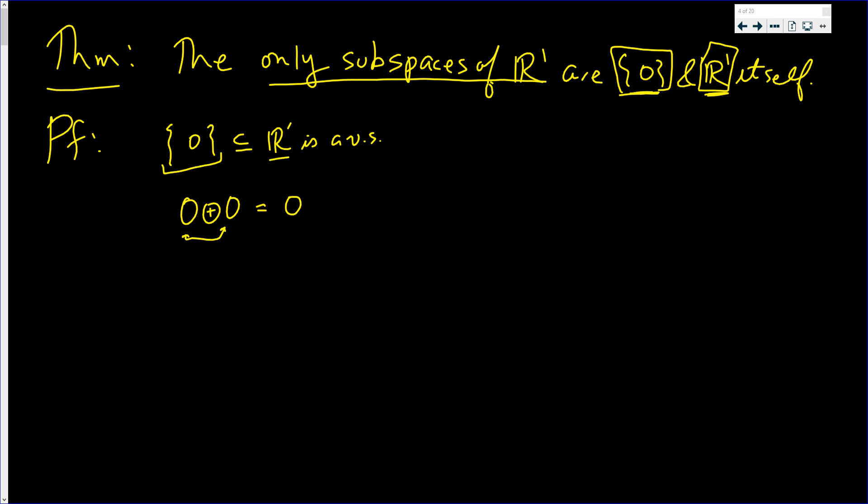Actually, since it's in R1, it's the number 0. So this is true. So this is true in R1 which implies that this vector is closed under circle plus.